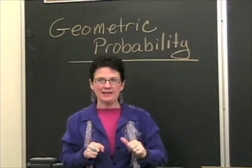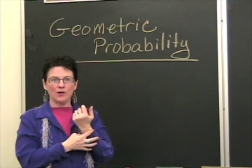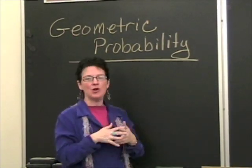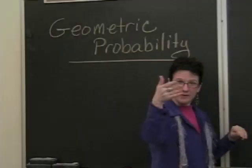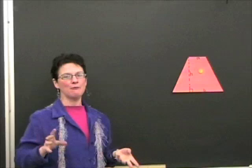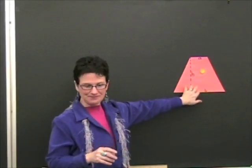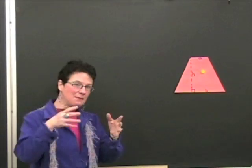You use geometric probability when you can't count the possible outcomes, when the possible things that could happen are infinite. The first example is to figure out the probability that a random throw at our chalkboard will hit this orange trapezoid.